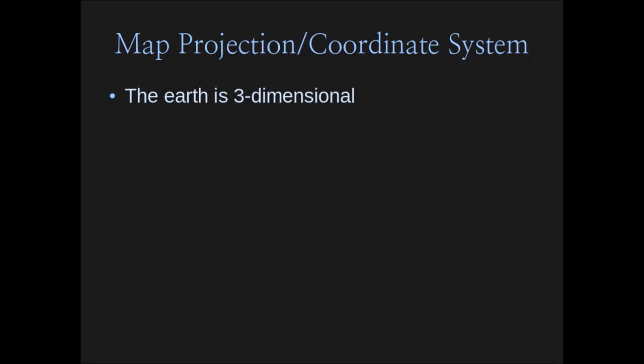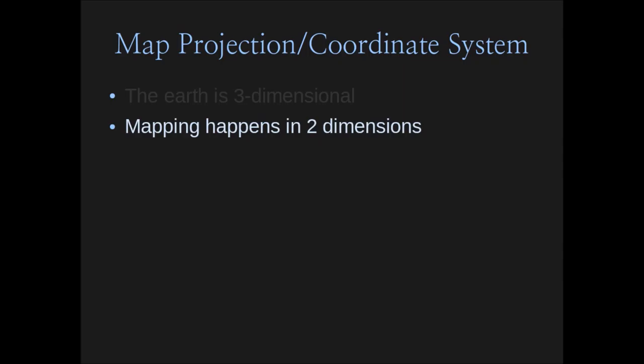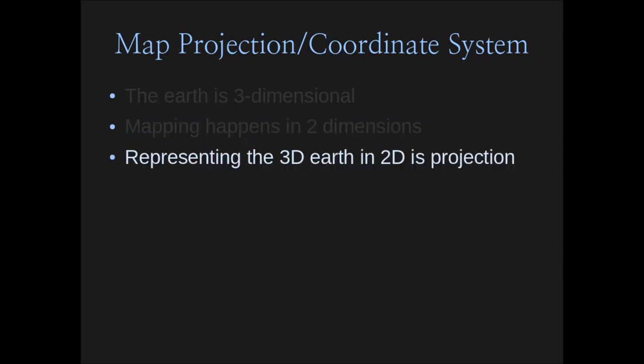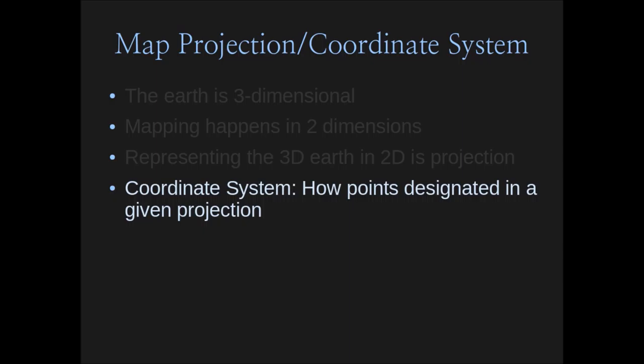I want to talk about some basic fundamental ideas about mapping in general and GIS in particular. We have to have some sort of projection and coordinate system. It turns out the Earth is not flat, which causes problems for mapping it on a flat surface — the Earth is three-dimensional. When we map things on Earth we tend to be mapping in two dimensions, which means we're representing a 3D Earth in a 2D projection, so intrinsically there will always be distortions. Every projection system is intrinsically distorted. The question is how do we minimize that distortion.